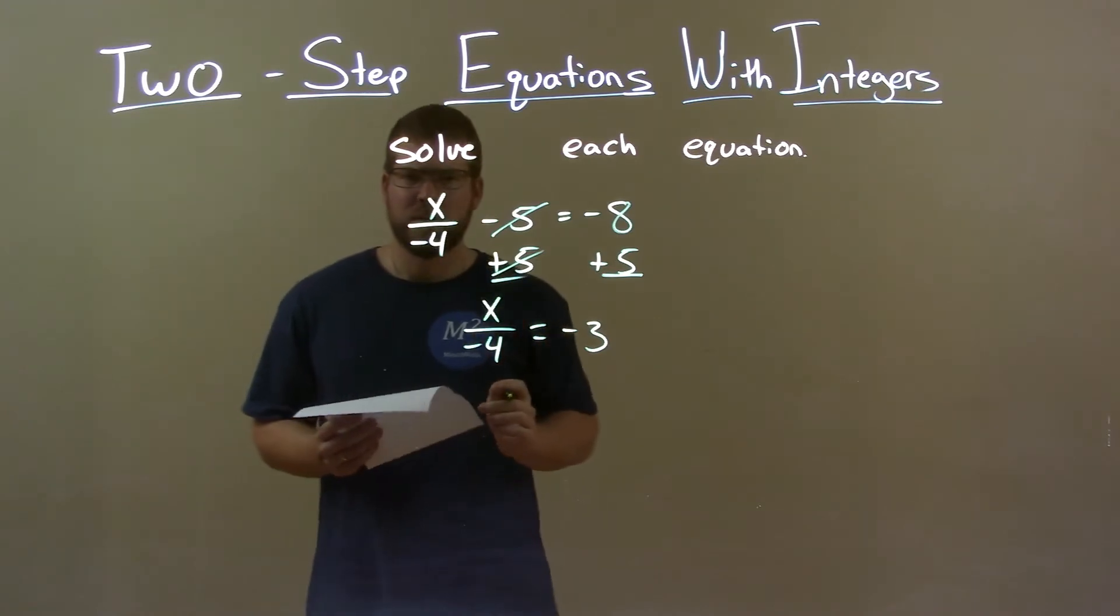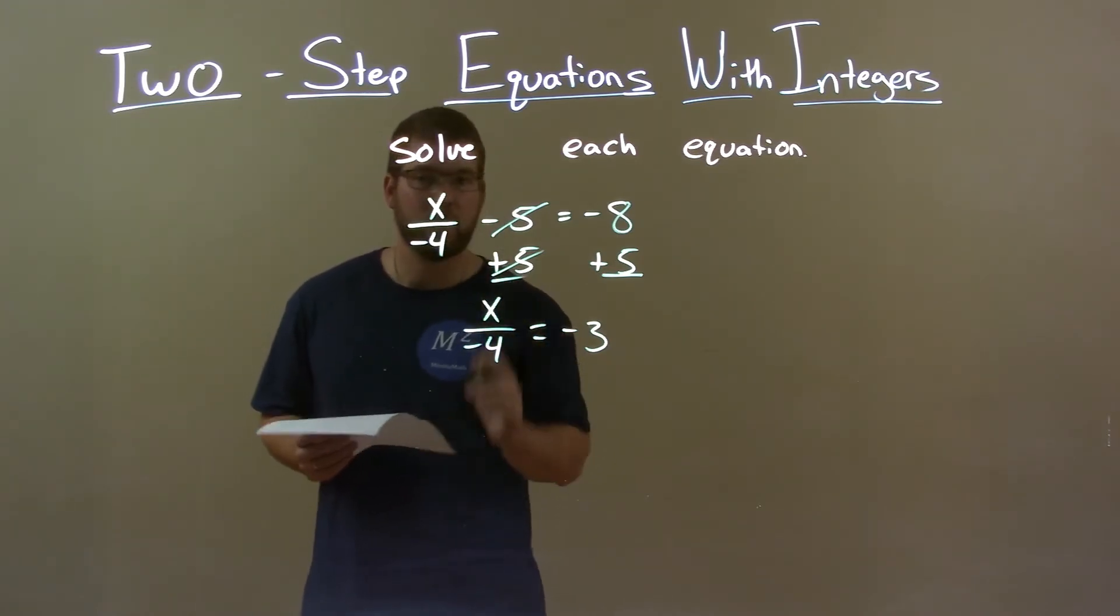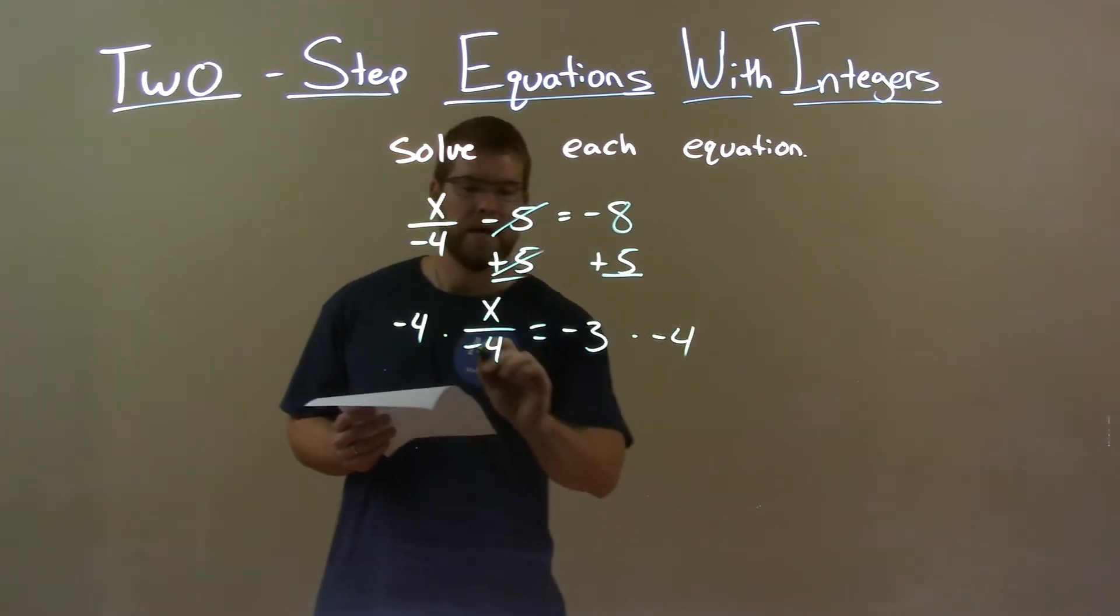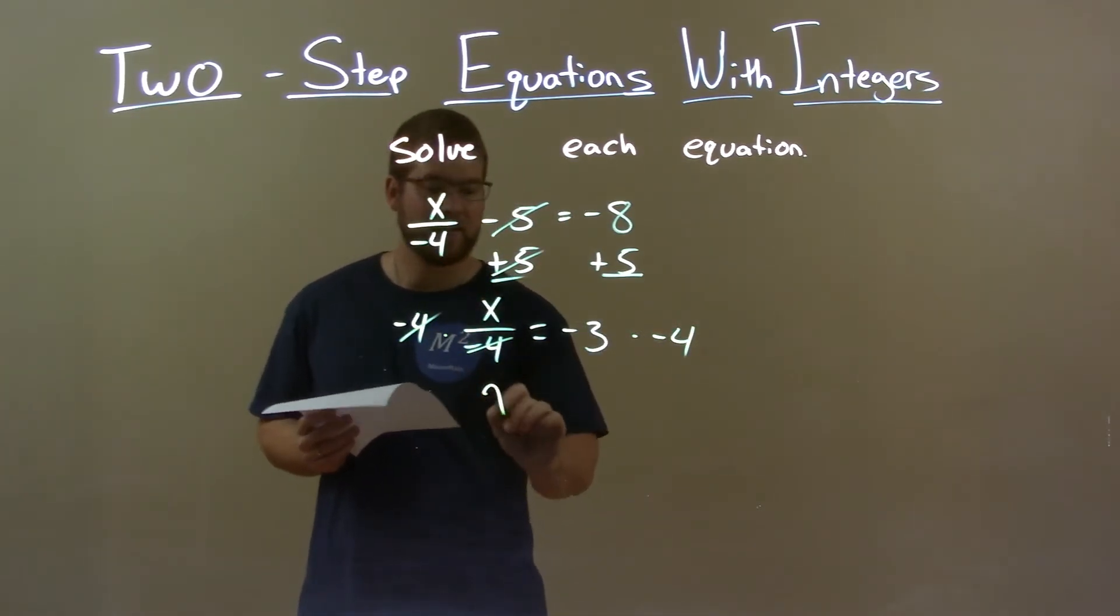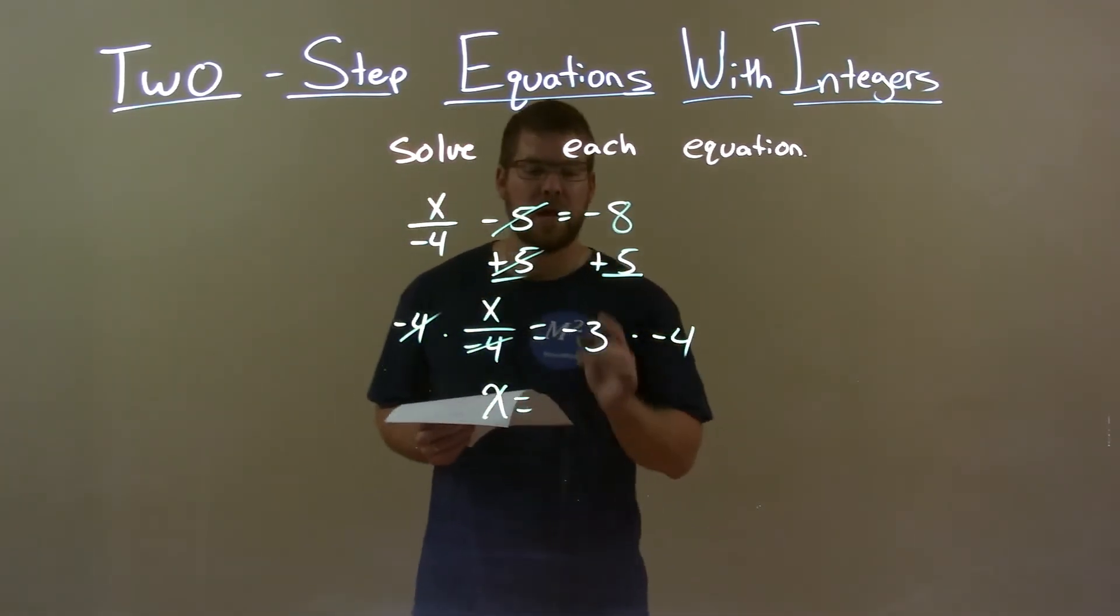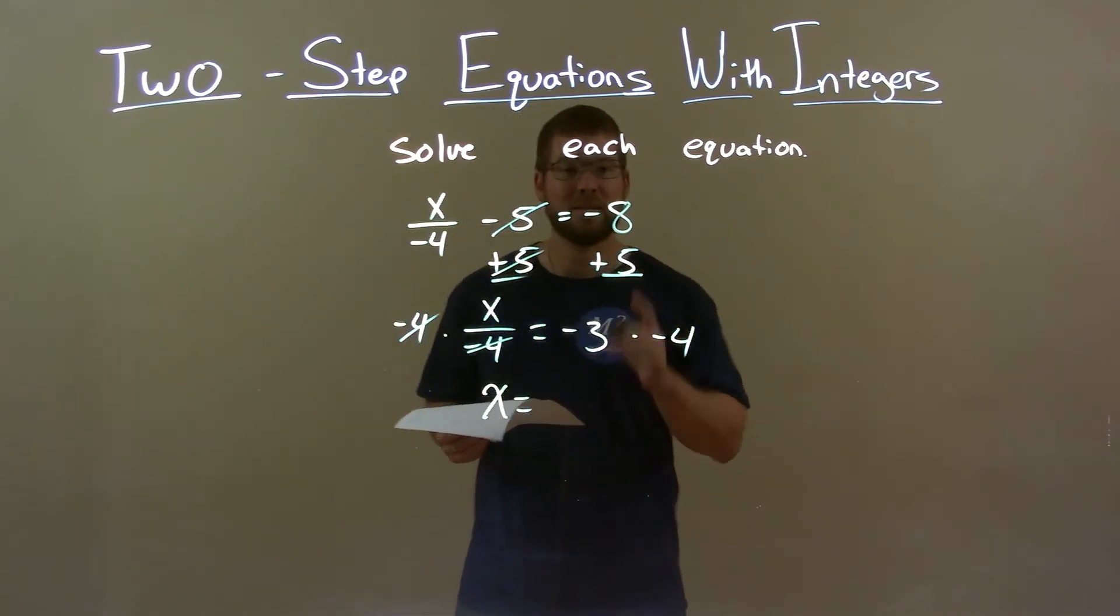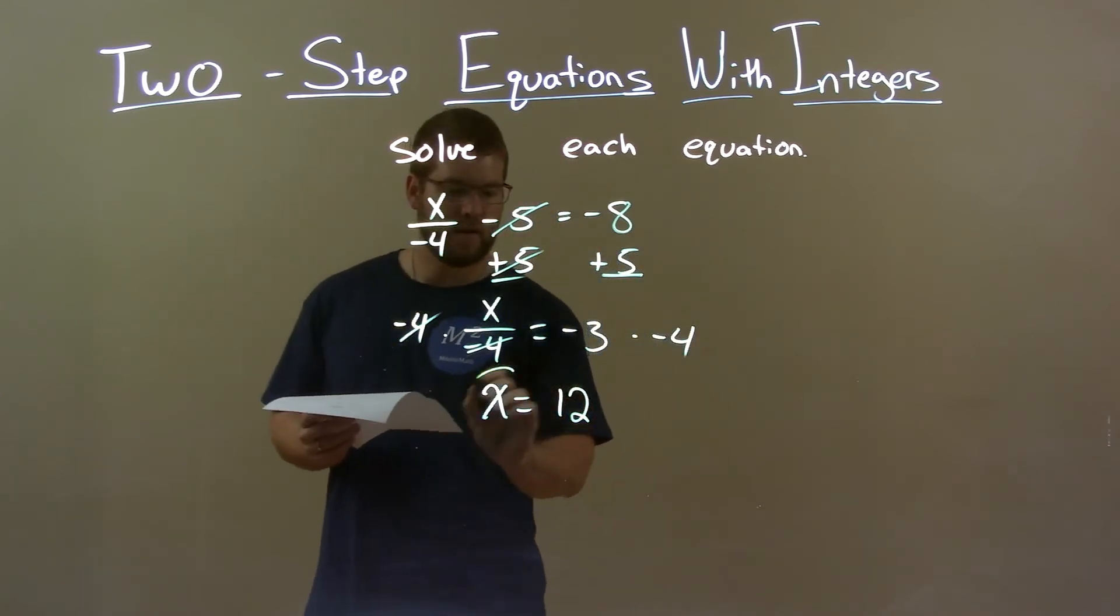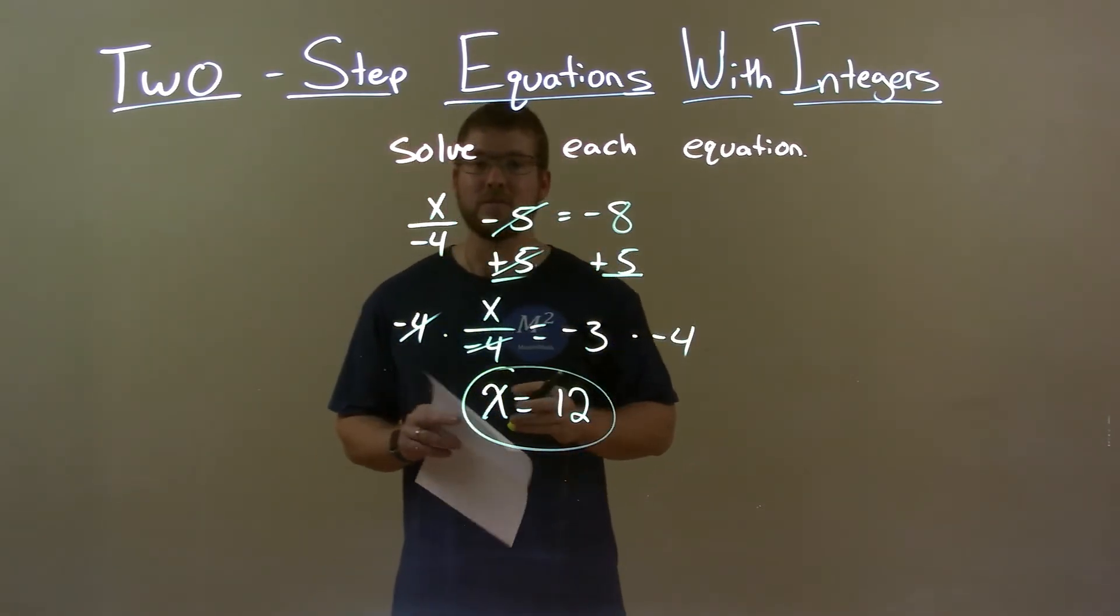Now, x divided by negative 4. Opposite of division is multiplication. Multiply negative 4 to both sides. Negative 4 gets cancelled out, giving me x by itself on the left. Negative 3 times negative 4 is positive 12. Remember, negative times a negative is a positive. So again, our final answer is x equals positive 12.